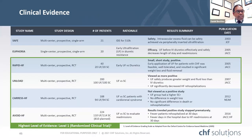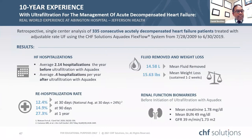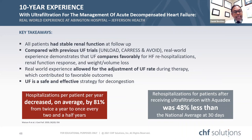The Aquadex ultrafiltration system has been used in major heart failure trials since 2003, with level one evidence from randomized controlled trials. A 10-year real-world experience at a single center studying 335 consecutive patients showed a mean fluid removal of 14 liters and decreased 30-day readmission rates to half the national average. Key takeaways: all patients had stable renal function at follow-up, real-world use demonstrates favorable outcomes for heart failure rehospitalizations and renal function, and ultrafiltration is a safe and effective decongestion strategy.